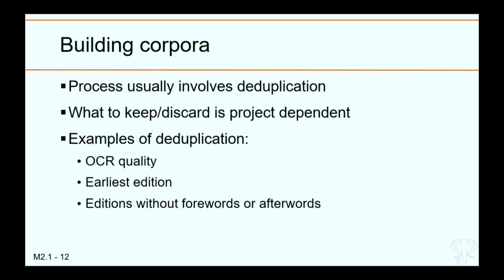Ways that a researcher might do deduplication might be based on OCR quality — which can vary highly from fairly dirty to highly curated — choosing the earliest edition, or choosing editions without forewords and afterwords. We'll see in Sam's project all the different ways you can choose to deduplicate.